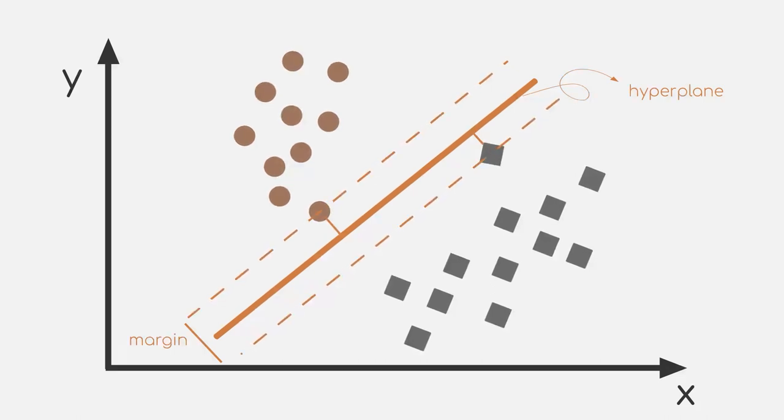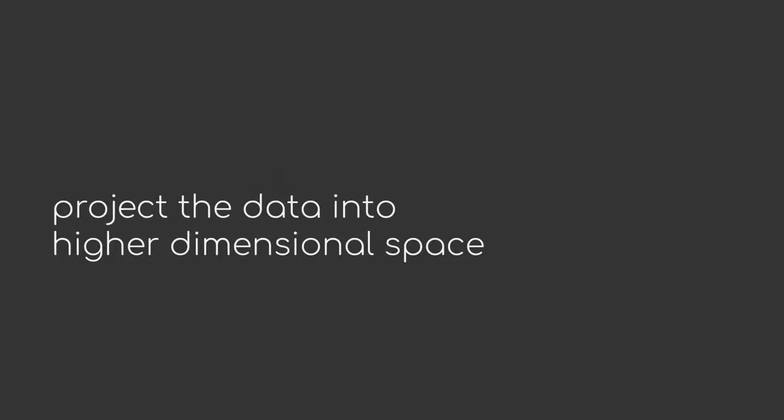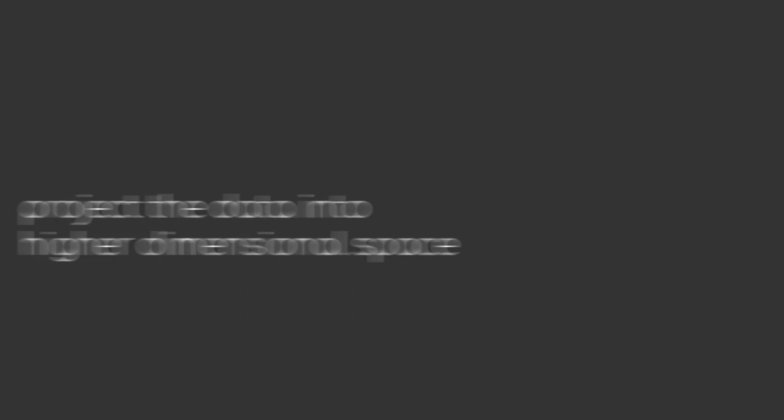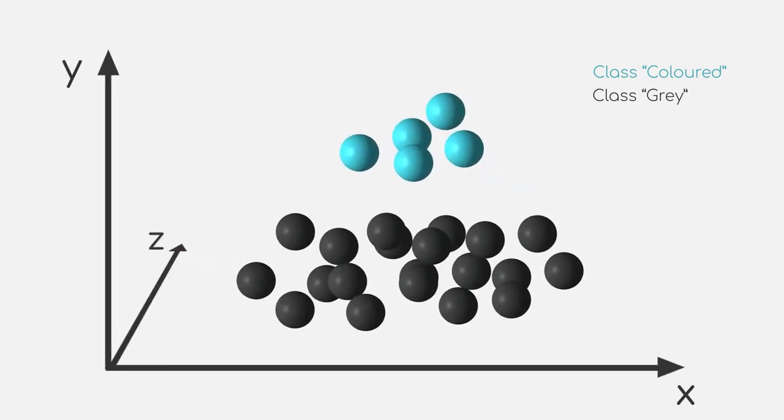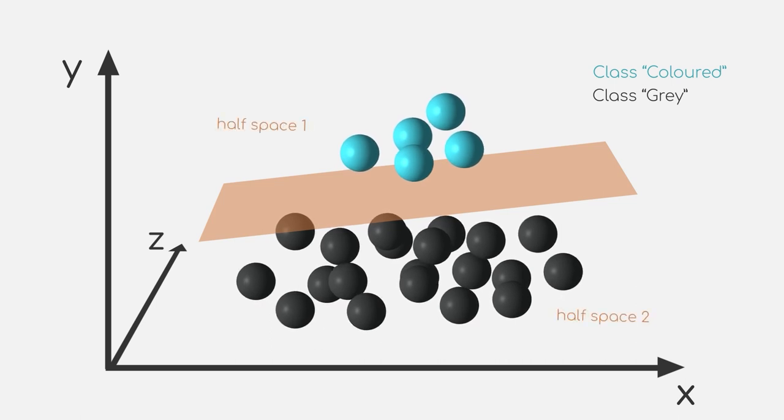But what if our data is not linearly separable in our space? Similar to what we discussed in the earlier video about kernels, an SVM can project the data into higher dimensions where it eventually becomes linearly separable. But computing the coordinates of all data points in our new space can be very cost expensive. And this is exactly where the so-called kernel trick matters.